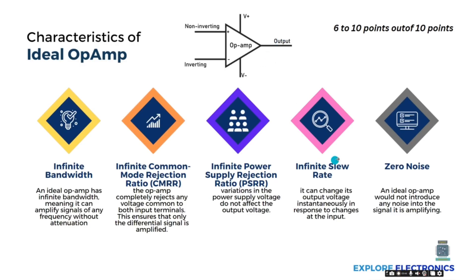Then, infinite slew rate. Infinite slew rate means the output changes instantly with respect to the input change. As the input from the inverting or non-inverting terminal changes, the op-amp will give the output change immediately — there will be no delay in producing the output as the input changes.